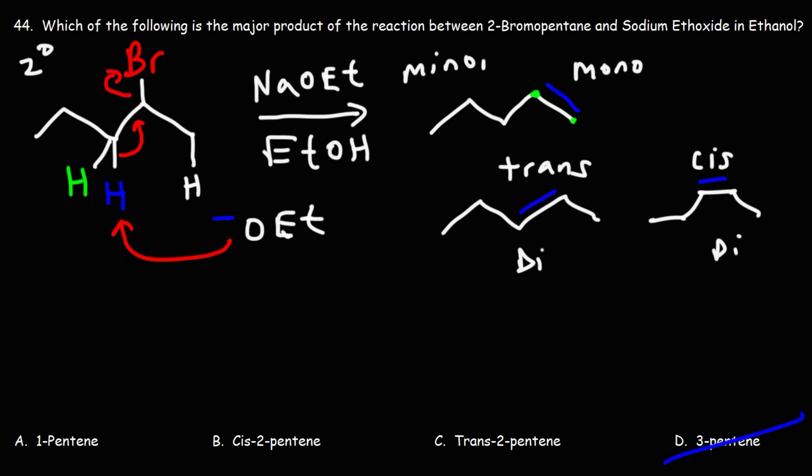The minor product, the less-substituted alkene, this is known as the Hofmann product. The major product, which is not always, but typically the more-substituted alkene, that's the Zaitsev product. Some books spell Zaitsev the other way, as S-A-Y-T-Z-E-F, something like that.